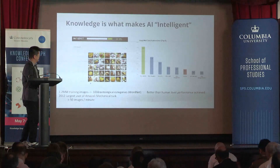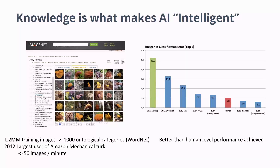When this ImageNet dataset came out, it was basically 1.2 million training images in about 1,000 different ontological categories. They used basically the hierarchy of WordNet — synsets — and these are all the different varieties of funguses that fall within that level of the tree.